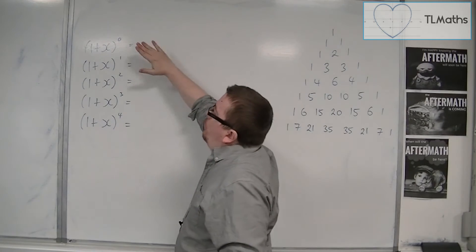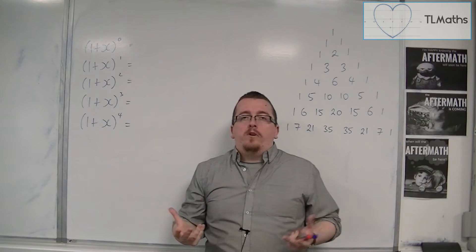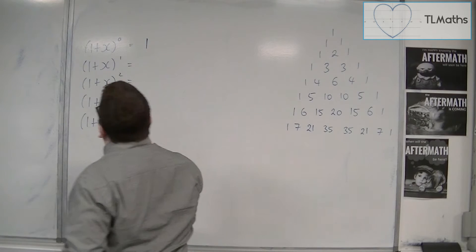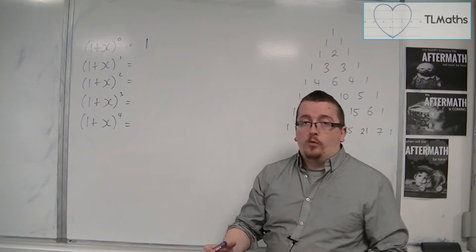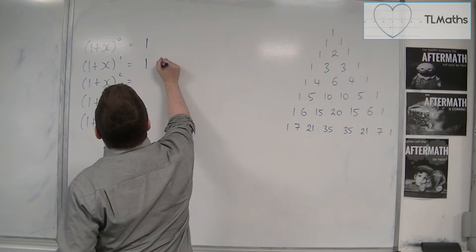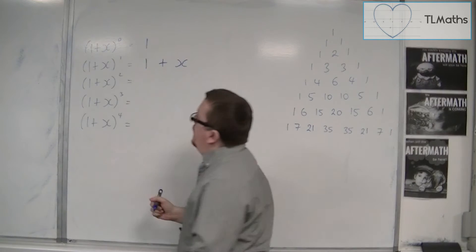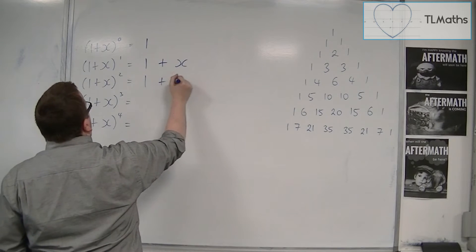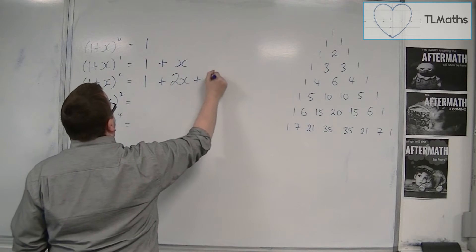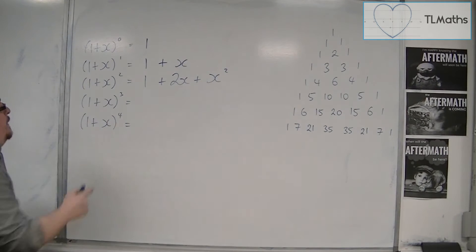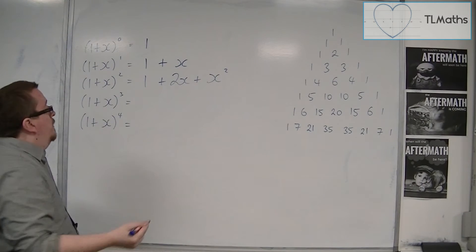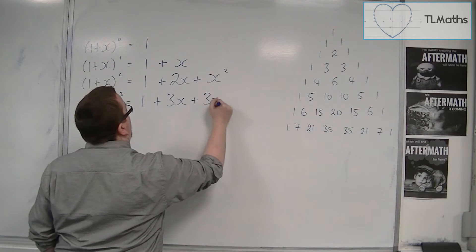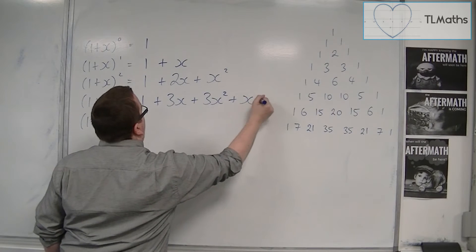So we're going to start at the top, 1 plus x to the power of 0. Now anything to the power of 0 we know is just 1. So that will just be 1. And then we have 1 plus x to the 1. Well, that's just the same as 1 plus x. Then we've got 1 plus x squared. Now that expands to 1 plus 2x plus x squared.